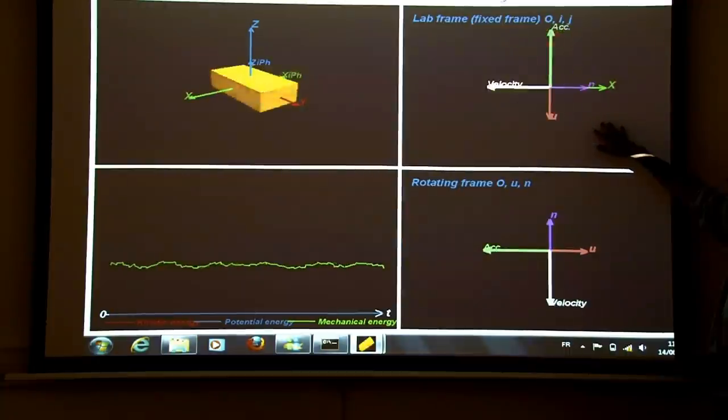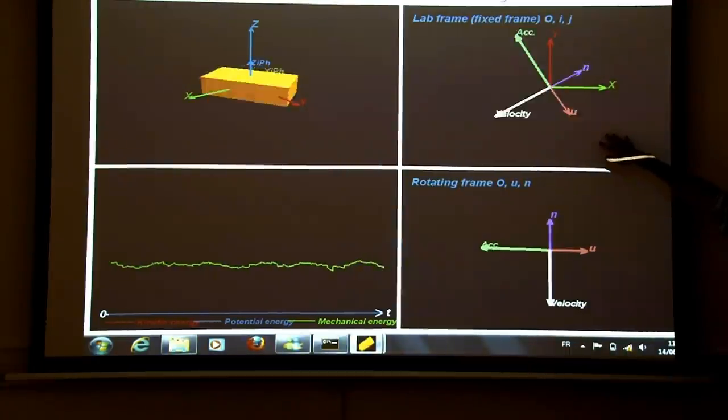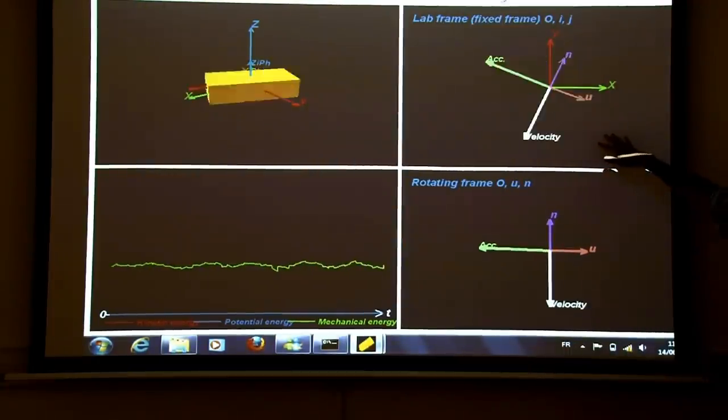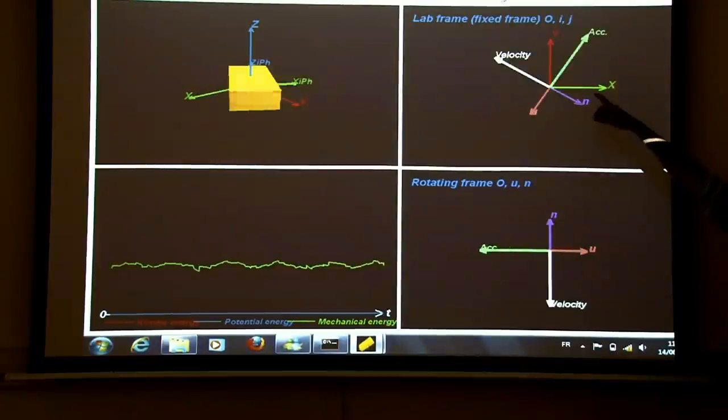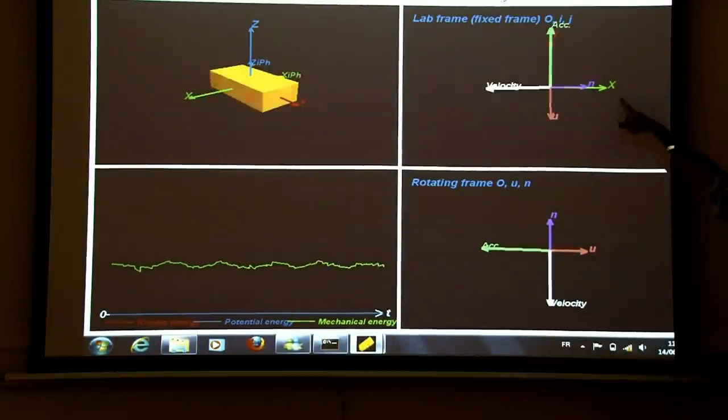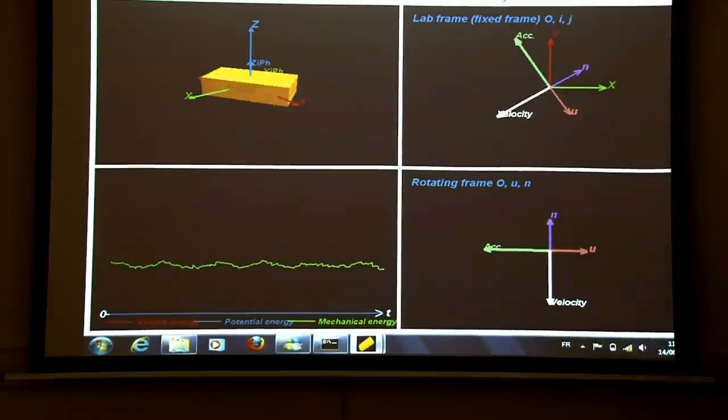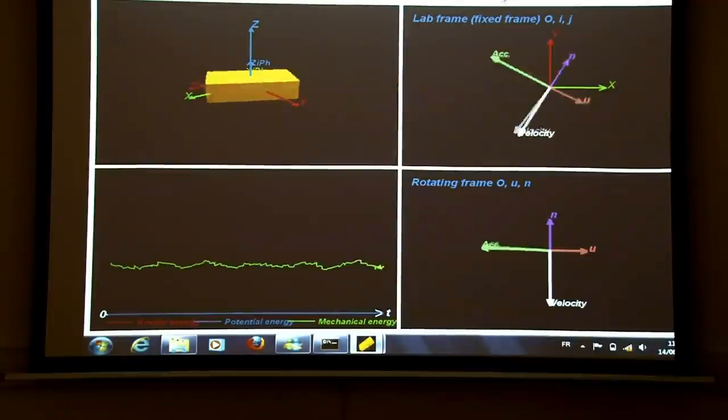We describe these two vectors, the acceleration vector of the iPhone and the velocity vector of the iPhone, in real time in the lab frame. X and Y are the vectors of the lab frame. They're not moving at all.